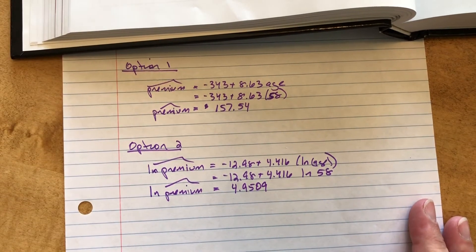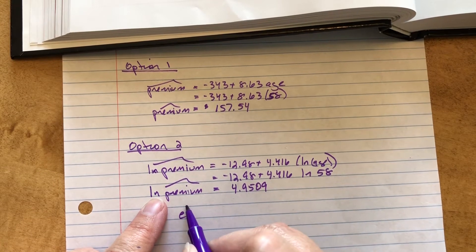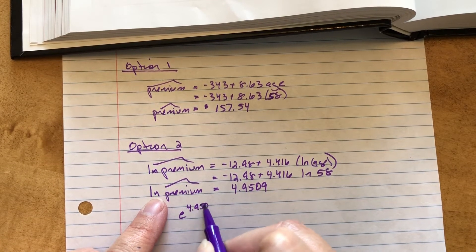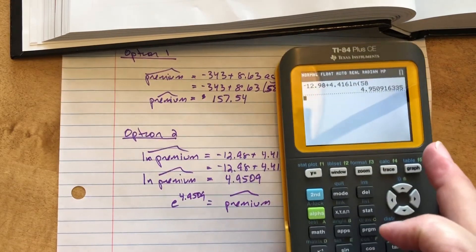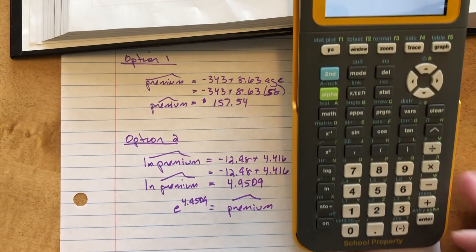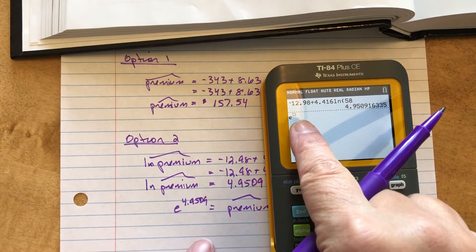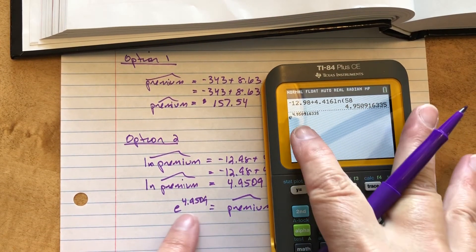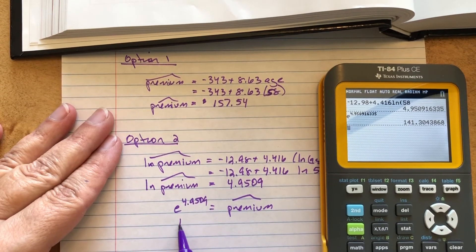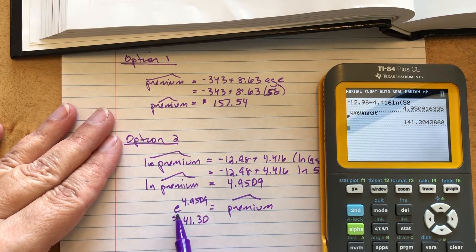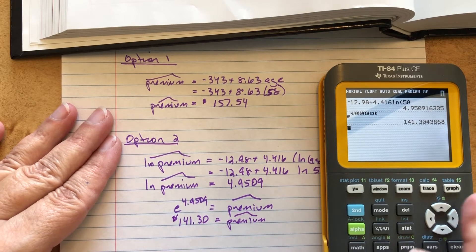Now, hopefully you remember in logs that natural log is a base E. So I can rewrite this as an exponential: E to the power of 4.9509 equals the predicted premium. Throw that in the calculator. We've got a little E button. Where's our E? There it is. We have to do second E or second natural log. So it brings E to the power. I'm just going to go up and grab that. So I won't even have any rounding. And that is 141. So my predicted premium for option two is $141.30.